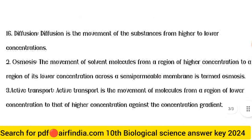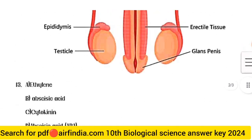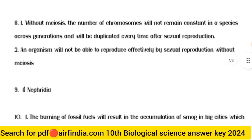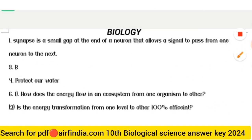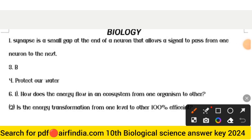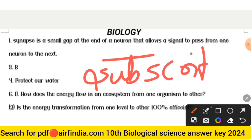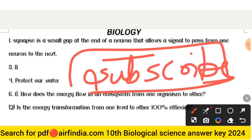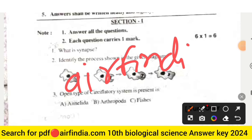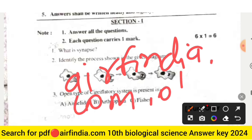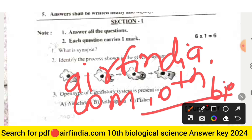This is the full answer key of Class 10th Biological Science, General Science Paper 2. I hope you liked the video. Please share the videos and subscribe our channel for more videos of Class 10th all subjects and exam papers. To get the PDF, search arpinder.com on Google. You can download the answer key easily on your mobile.